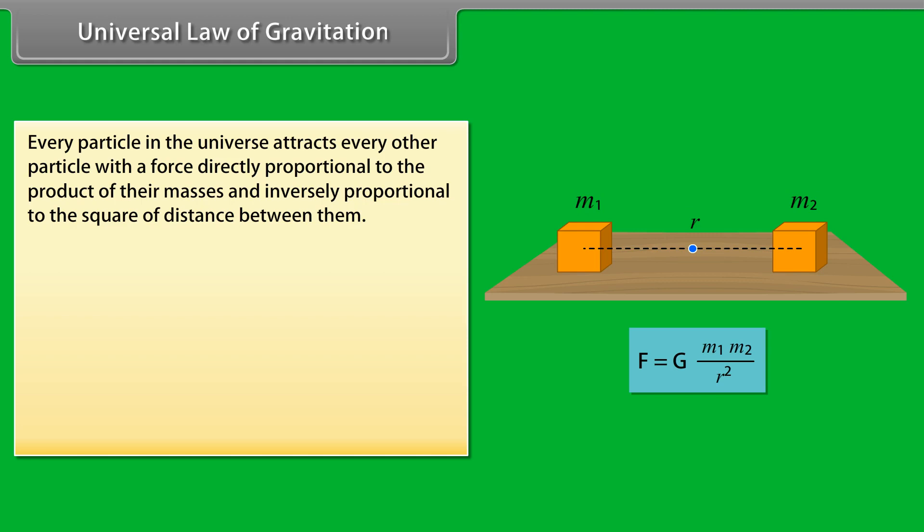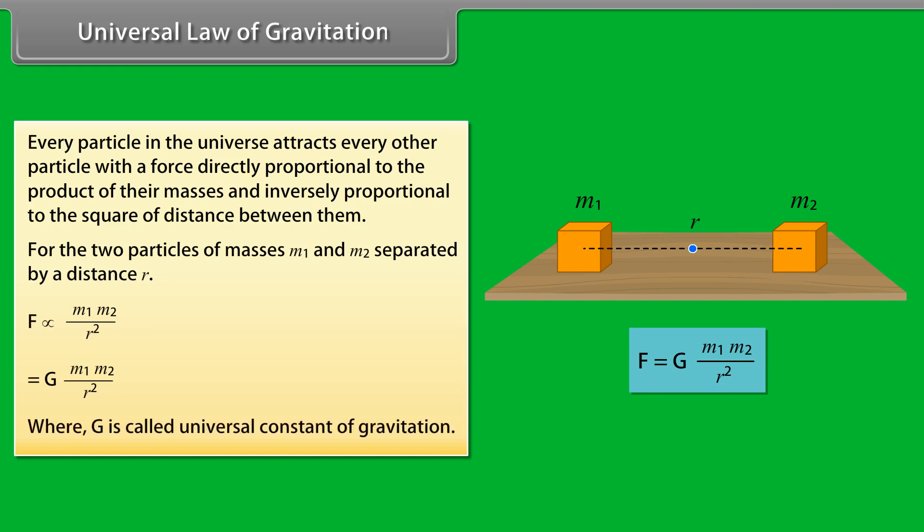The direction of this force is along the line joining the two particles. For two particles of masses m1 and m2 separated by a distance r, f equals g m1 m2 upon r square. The constant g is called the universal constant of gravitation.